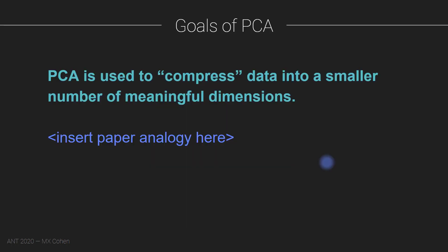With that brief introduction to covariance matrices, I'm now going to tell you about PCA — principal components analysis. The goal of PCA is to compress the data into a smaller number of more meaningful dimensions. When introducing PCA, I often give the analogy of a piece of paper.